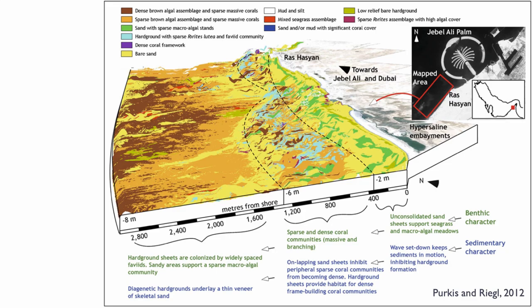What's striking on this model is you can immediately see that we have broad bands — a facies belt. You can recognize a band of sand at the very top, a band of the orange color representing sparse brown algae, and then a band of the dark color which is the dense brown algae assemblage.